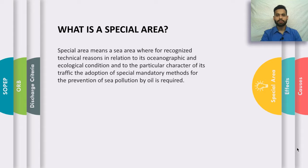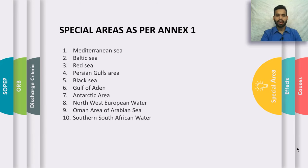As per Annex 1, there are 10 special areas: the Mediterranean Sea, the Baltic Sea, the Red Sea, the Persian Gulf area, the Black Sea, the Gulf of Aden, the Antarctic area, Northwest European waters, the Oman area of the Arabian Sea, and Southern South African waters. Certain regulations must be implemented when ships are en route in these areas.